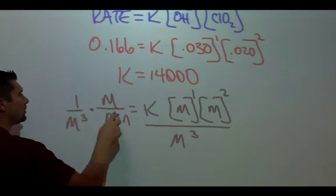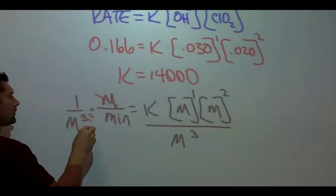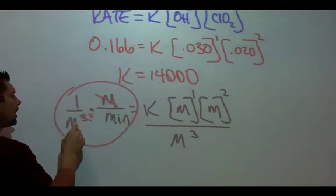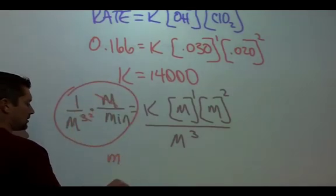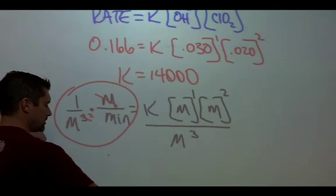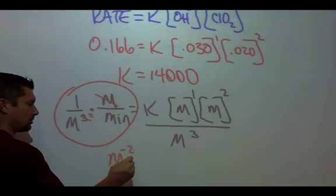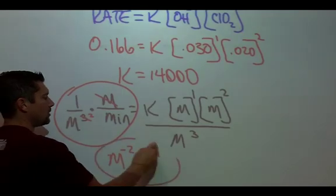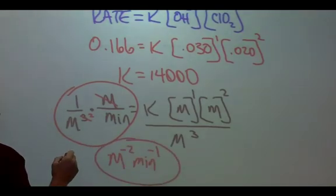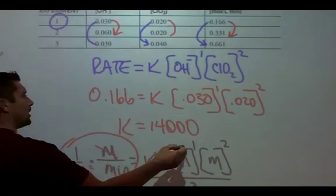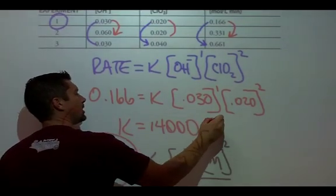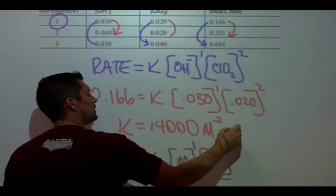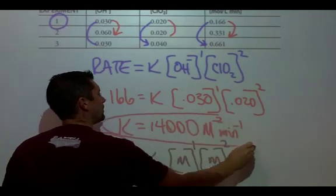I can cancel out one of these M's. So my units that are left over are M, that's supposed to be a capital M, M to the negative 2 minutes to the negative 1. So I go up here to K and write M to the negative 2 minutes to the negative 1.